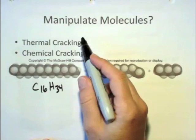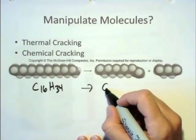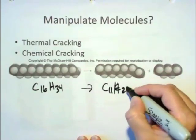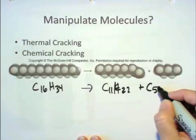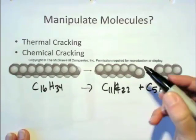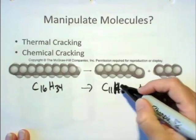You can subject it to high heat, and it will crack. It will break into two smaller molecules, for example, C11H22 plus C5H12. And you see that the total number of carbons, this is an H here, the total number of carbons is conserved, the total number of hydrogens is conserved, it's just broken.